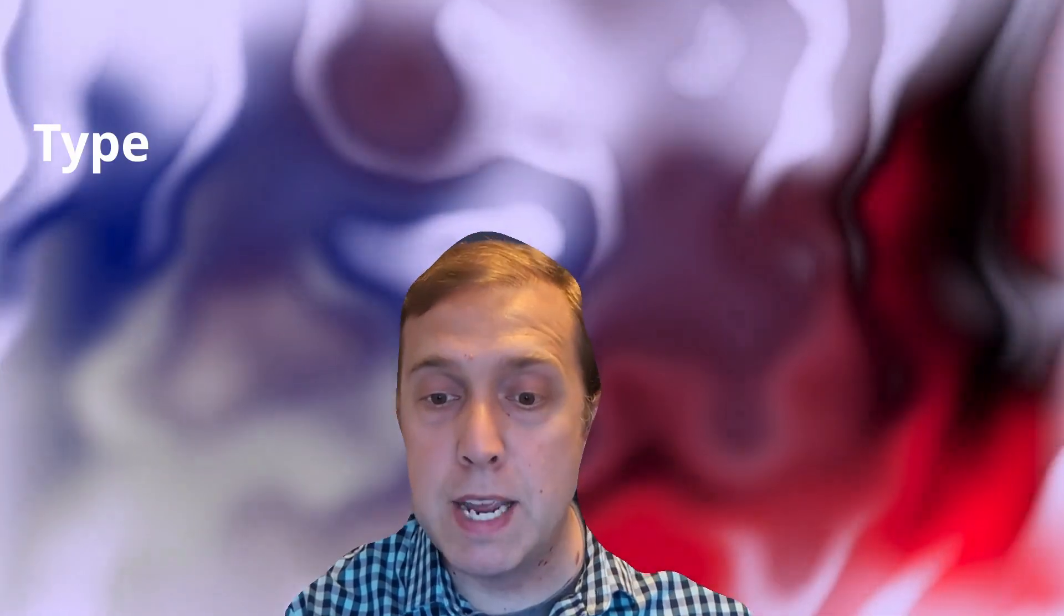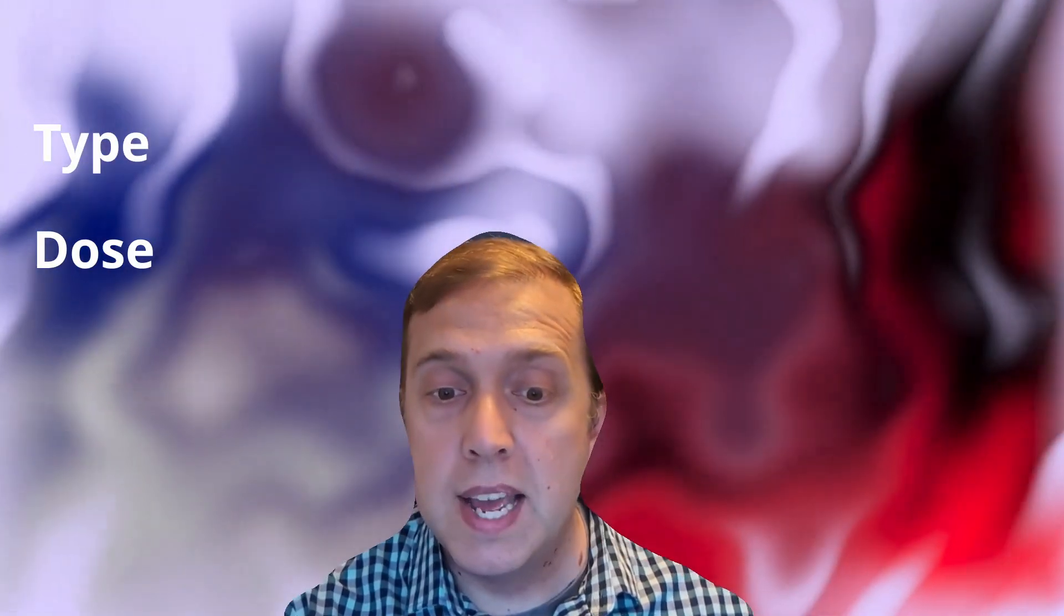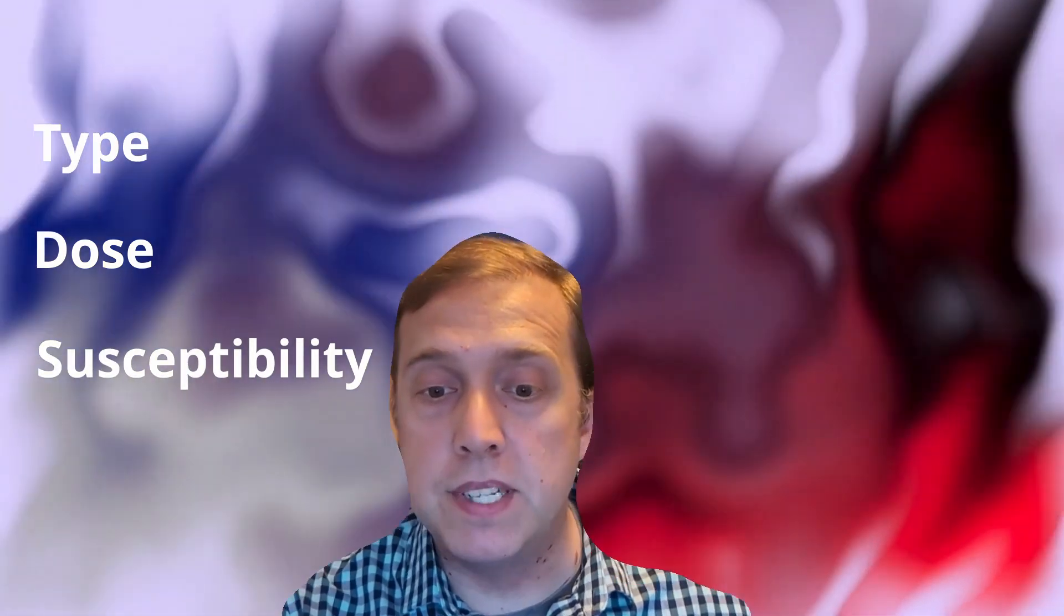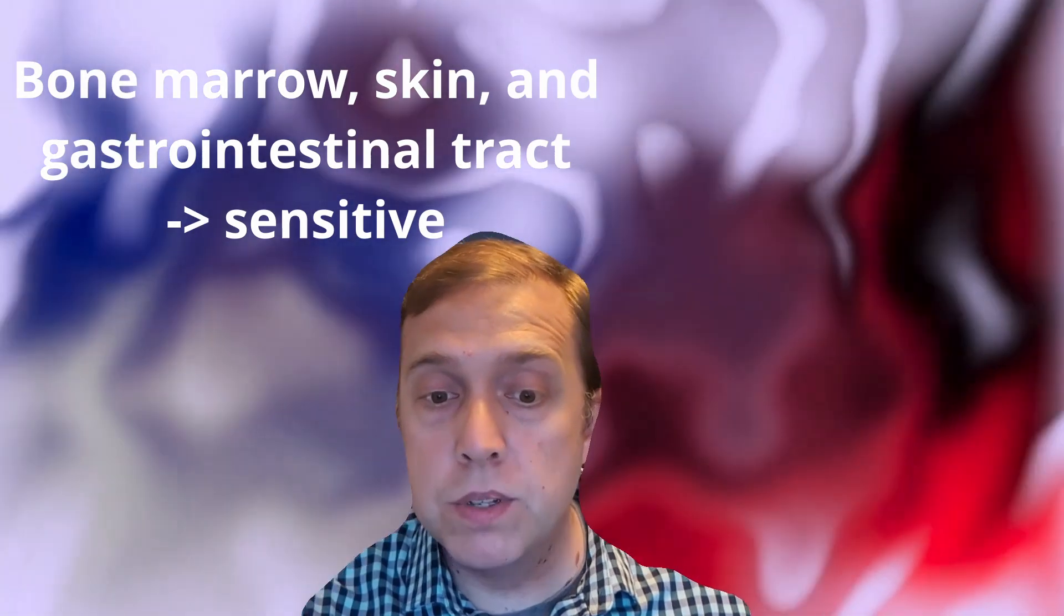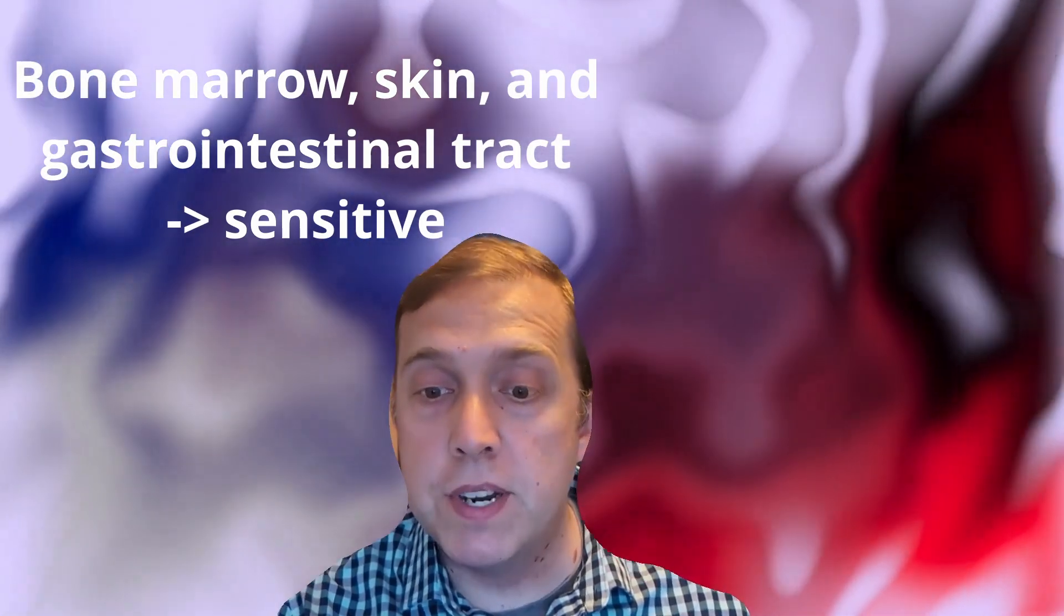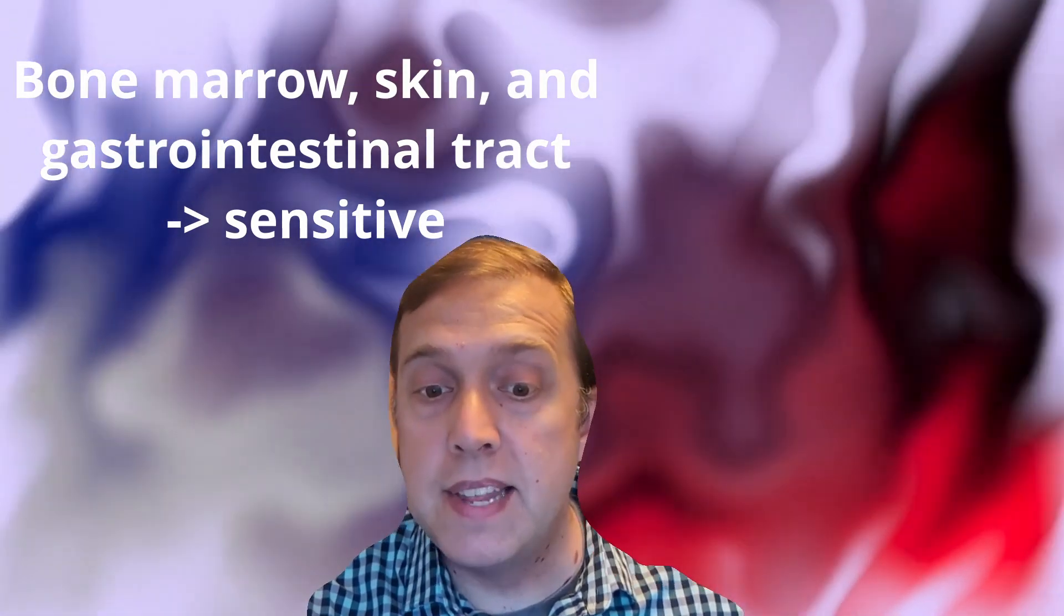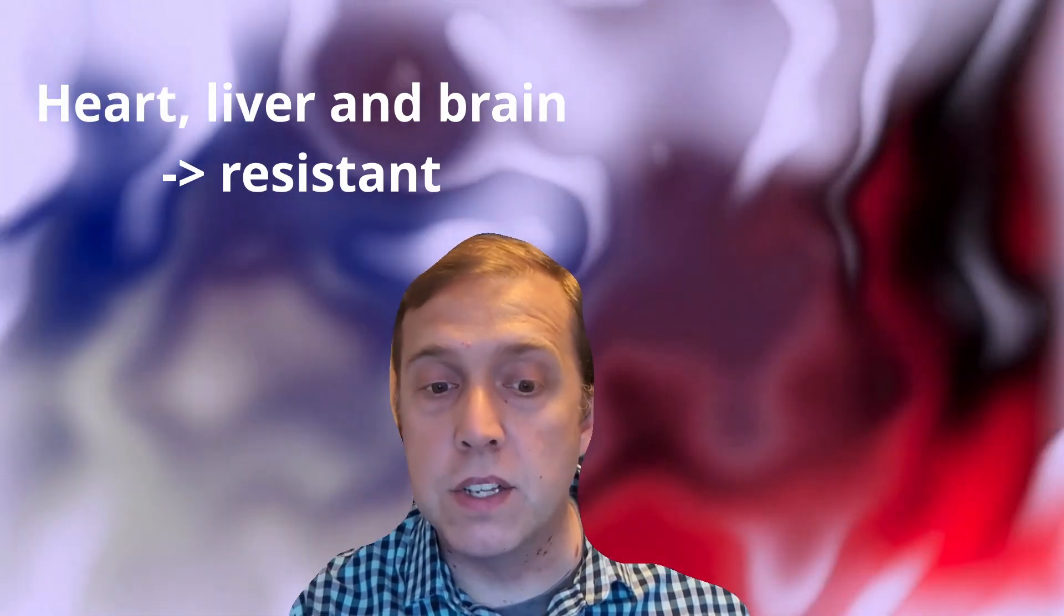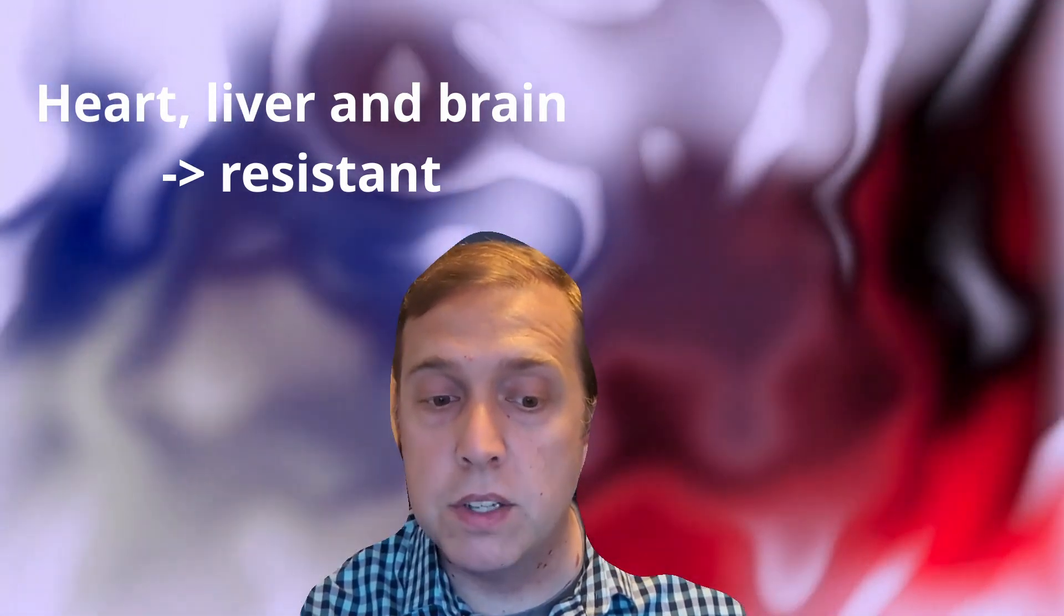Humans absorb radiation differently depending on the type of radiation, the radiation dosage into the tissues, and the susceptibility of the tissues to radiation-induced damage. For example, bone marrow, skin, and gastrointestinal tract cells are very sensitive to radiation damage, with one factor being that they divide more frequently. Other cells like the heart, liver, and brain cells are more resistant and they tend to have less frequent cell division.